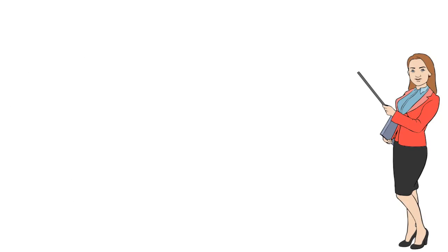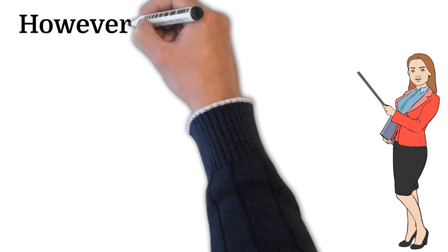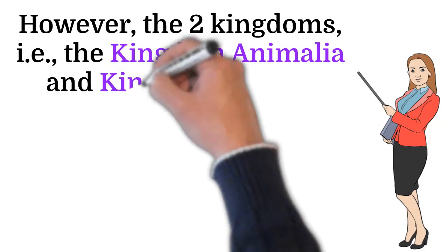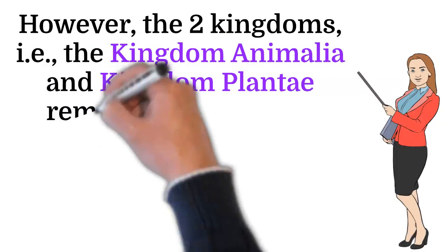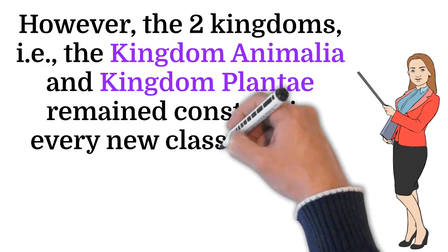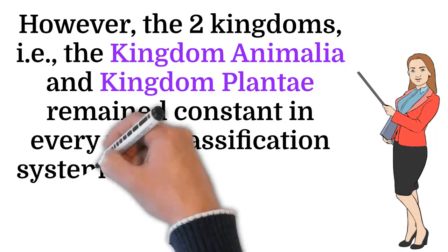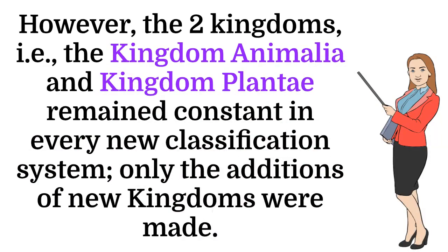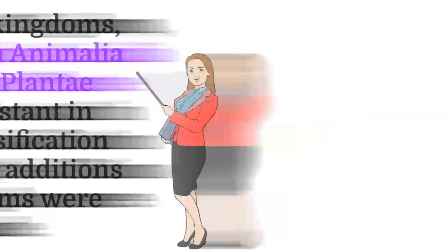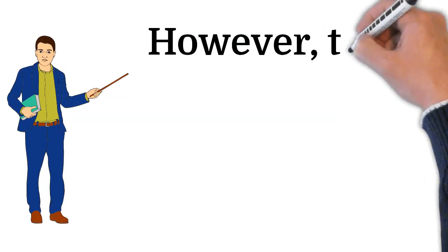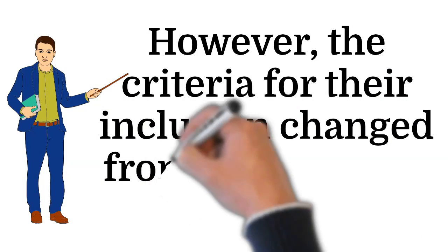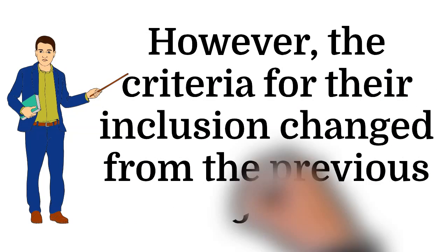However, the two kingdoms — Kingdom Animalia and Kingdom Plantae — remain constant in every new classification system. Only the additions of new kingdoms were made. However, the criteria for their inclusion changed from the previous one.